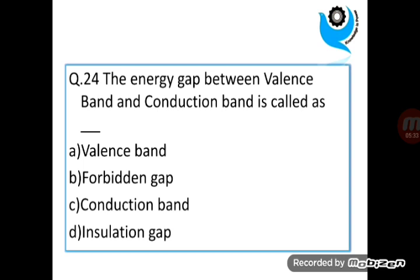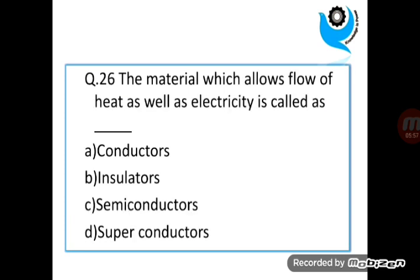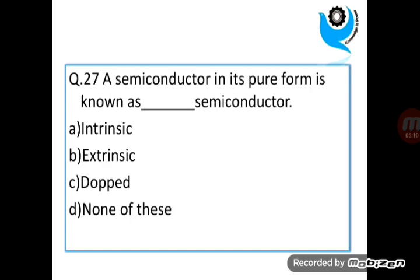Question 24. The energy gap between valence band and conduction band is called as. Answer is forbidden gap. Question 25. The materials whose conductivity is less than conductor and more than insulators are called as Semiconductors. Question 26. The material which allows flow of heat as well as electricity is called as Conductors. Question 27. A semiconductor in its pure form is known as dash semiconductor. Answer is intrinsic.